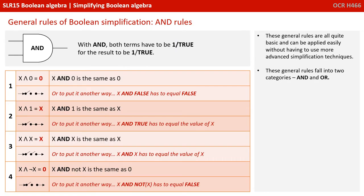So these general rules are quite basic and can be applied easily without having to use more advanced simplification techniques. These general rules fall into two categories: AND and OR. Here are the four generic AND rules. Remember, with AND, both terms have to be one or true for the result to be one or true.